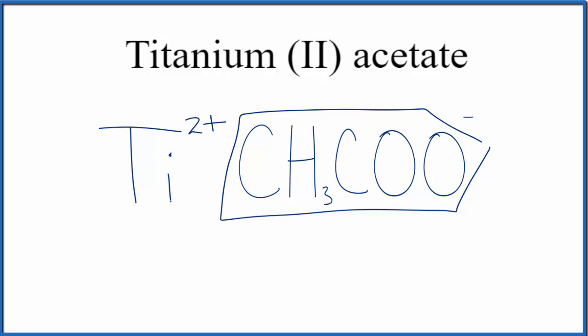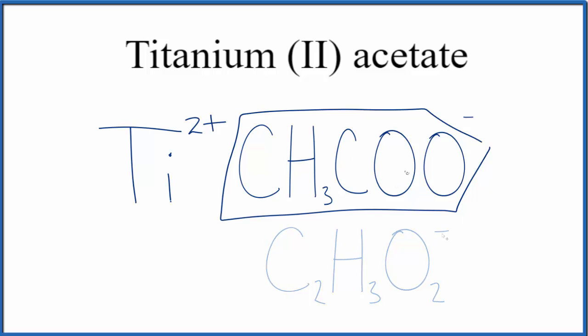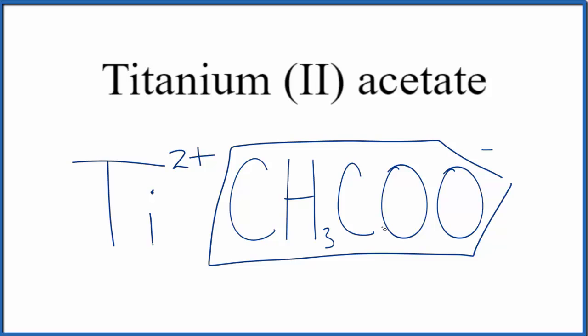You'll also see the acetate ion written like this. It's the same thing, just arranged a little bit differently. Let's go with this one up here. So since we have this metal and this group of nonmetals, this polyatomic ion, we need to balance the charges.